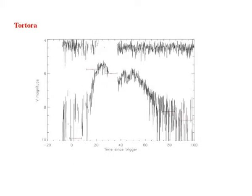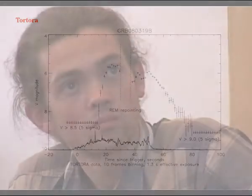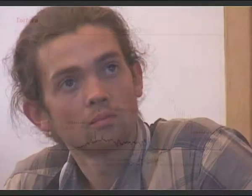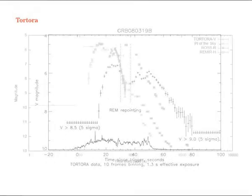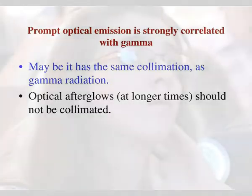This is the optical light curve — it's called the 'naked eye gamma-ray burst' because it is brighter than sixth magnitude. This light curve repeats almost exactly the gamma-ray burst light curve and lasts about 60 seconds. Then it drops very strongly: after 60 seconds it drops to magnitude 13, and after 1,000 seconds it is only detectable by larger telescopes. The prompt optical emission is very strongly correlated with gamma.